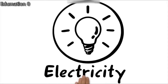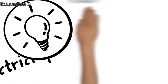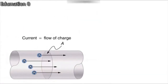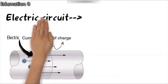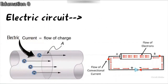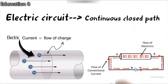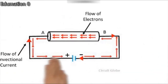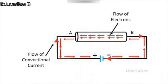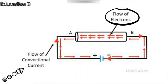Today we will learn physics of class 10, that is electricity. The rate of flow of charges is called electric current. It is carried by the electrons flowing in the conductor. Electric circuit is a continuous closed path of electric current. Remember, the direction of flow of charges — that is electrons — is opposite to the direction of the electric current.